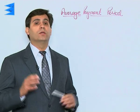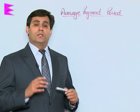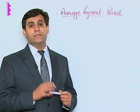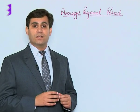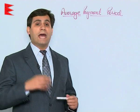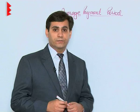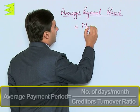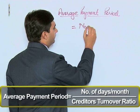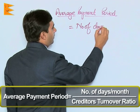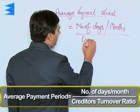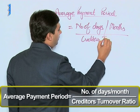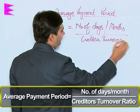Another concept related to creditors turnover ratio is average payment period. Just like debtors collection period, this ratio gives us an indication of the number of days or months in which, on an average basis, we are making the payment to our creditors. So it can be calculated as number of days or months divided by creditors turnover ratio.